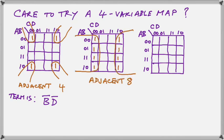Here we have an adjacent eight squares. Eight squares remove three letters. Since the function has four letters, A, B, C, and D, after we remove three letters, we have D-bar. Because all eight squares have D as a zero, even though they all differ in the other three letters.